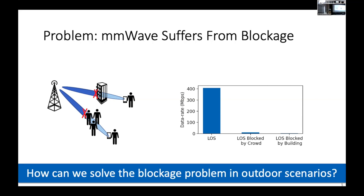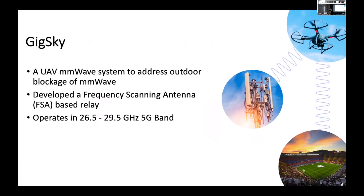The question is how can we solve the blockage problem in outdoor scenarios where we want to cover a large area of users? To solve this problem, we propose GIGSky — a UAV millimeter wave system designed to address the outdoor blockage problem. In particular, we developed a frequency scanning antenna with low cost and low complexity to relay the signal from a base station over an aerial relay to cover users in a certain area. Our system works in the millimeter wave 5G frequency band between 26.5 to 29.5 GHz, a commercialized band supported by the majority of carriers in the U.S.